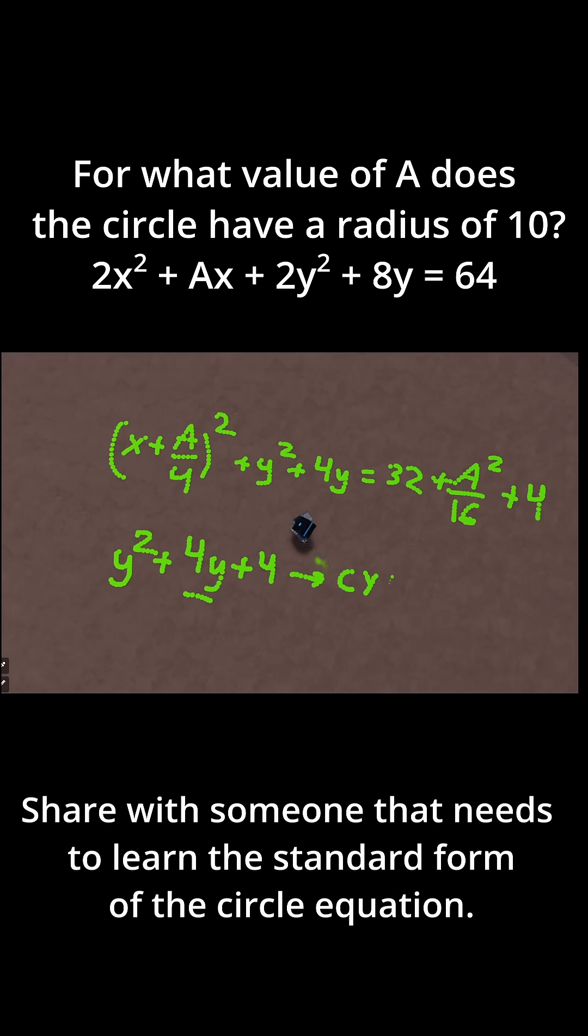And then let's factor y² + 4y + 4. That just turns into (y + 2)². And once again, quick trick to get this number, just take this middle coefficient, divide it by 2. So now let me rewrite this. I'll have + (y + 2)².